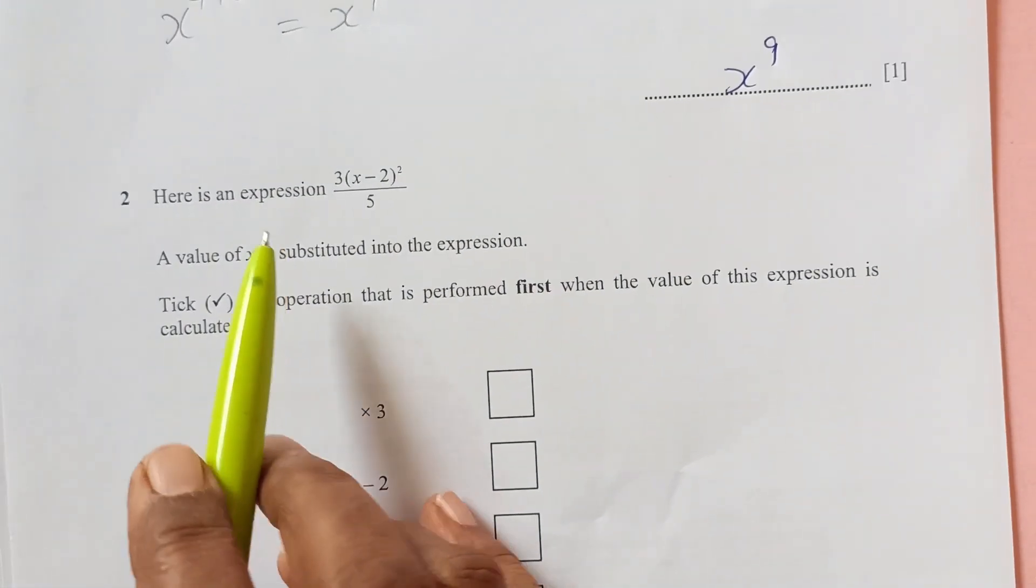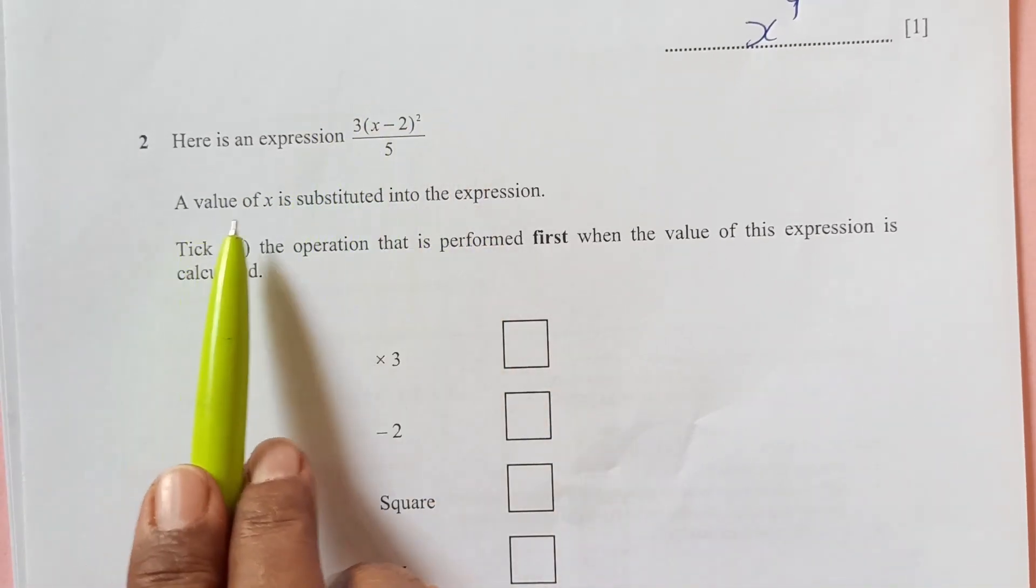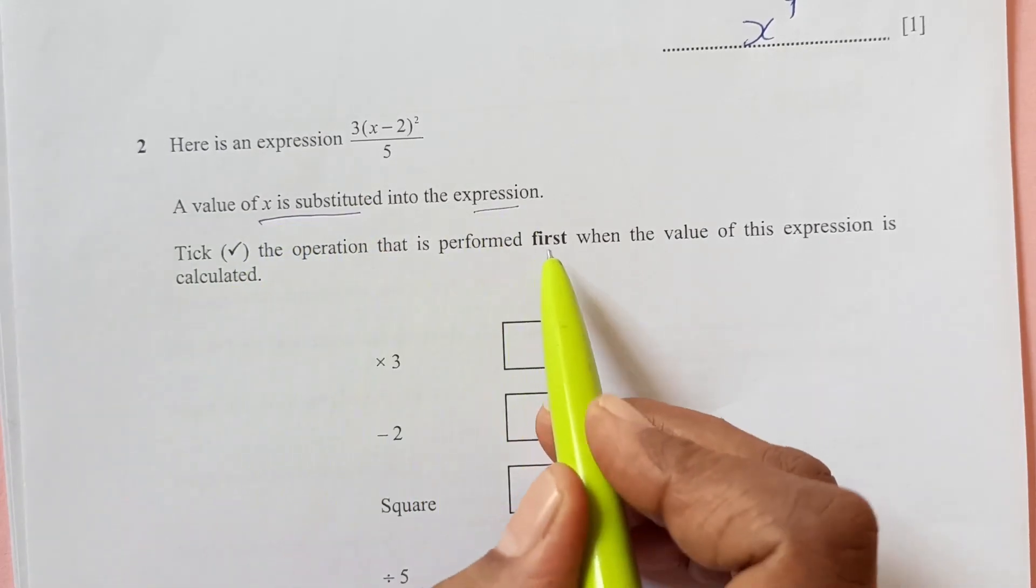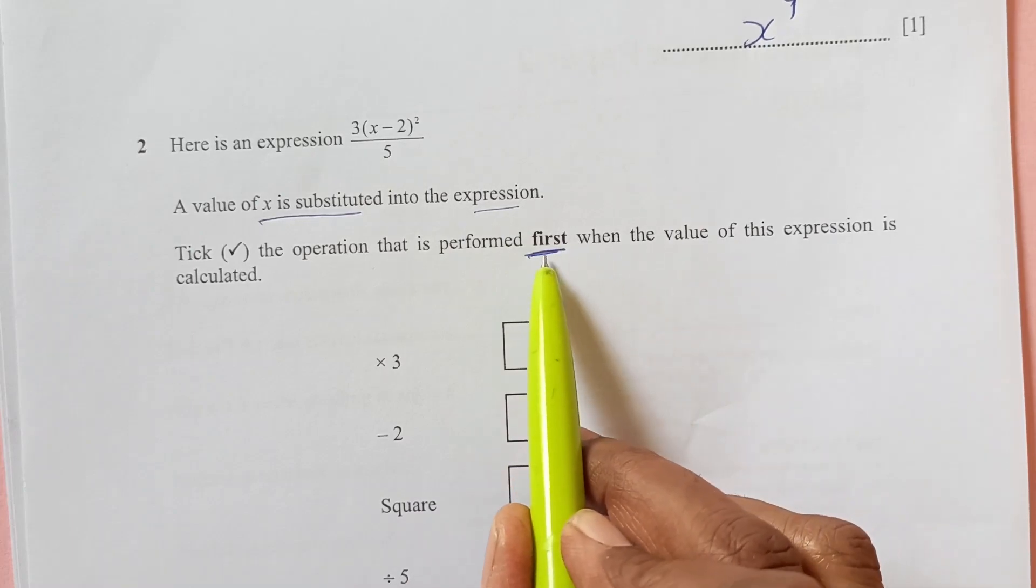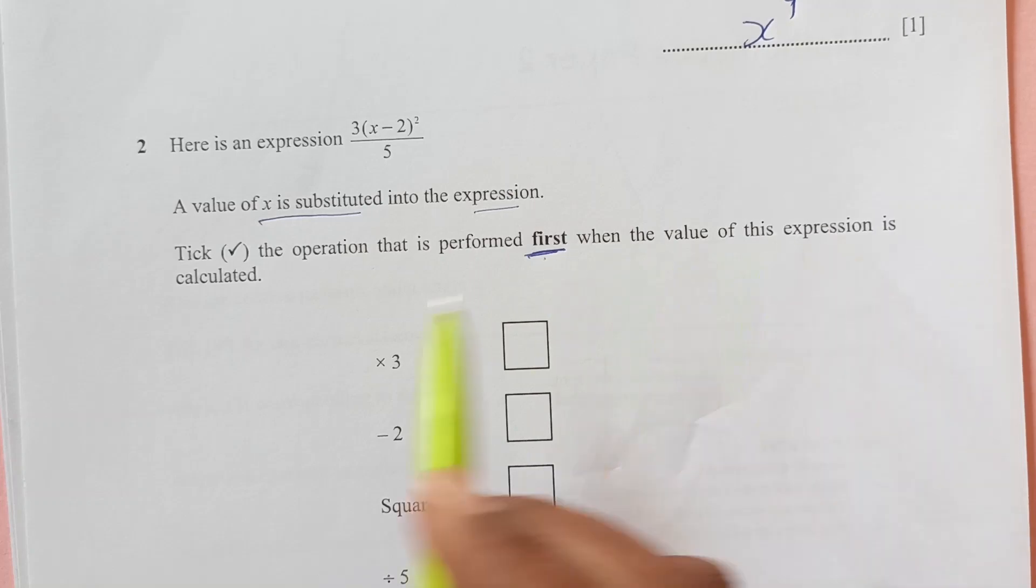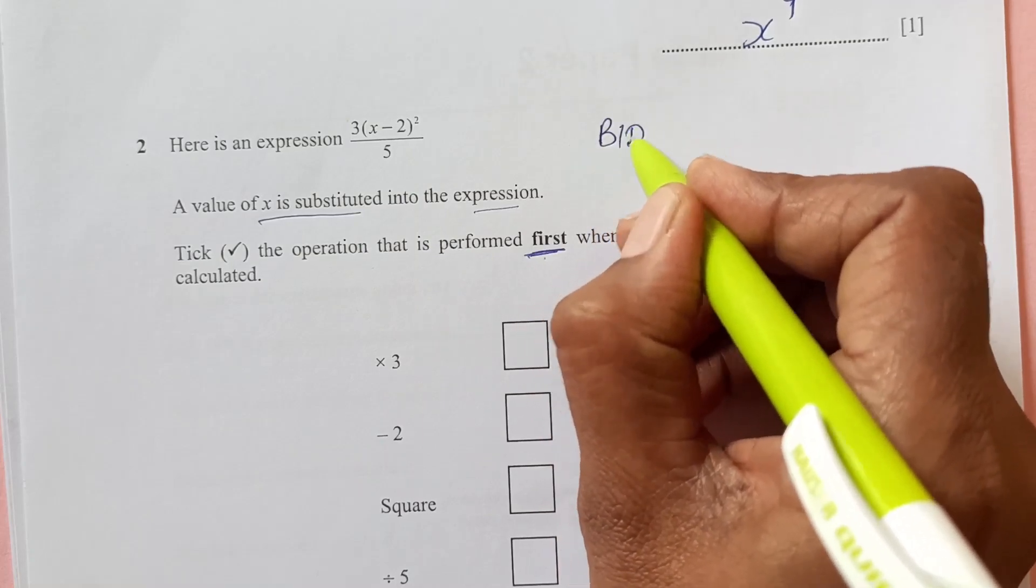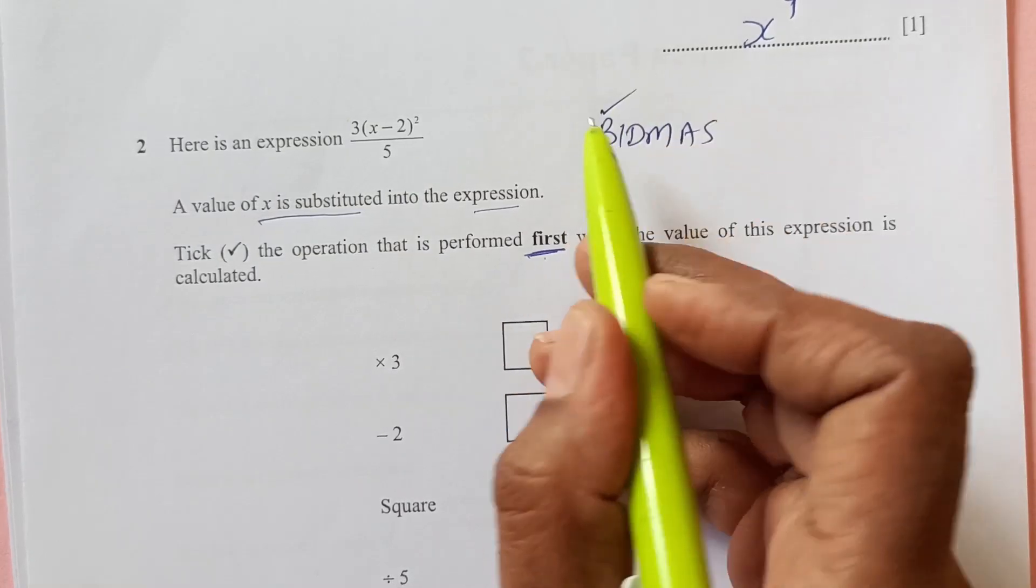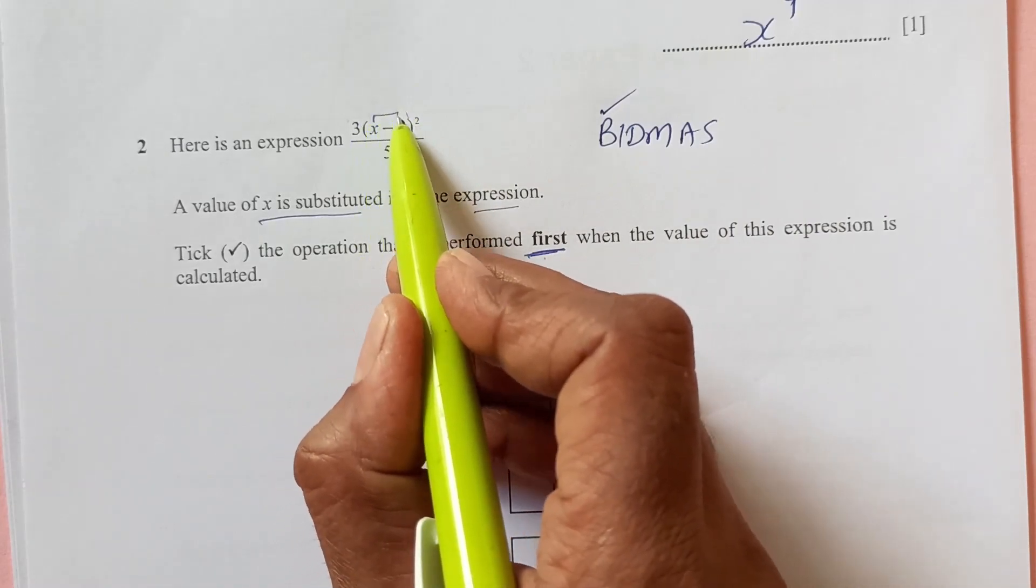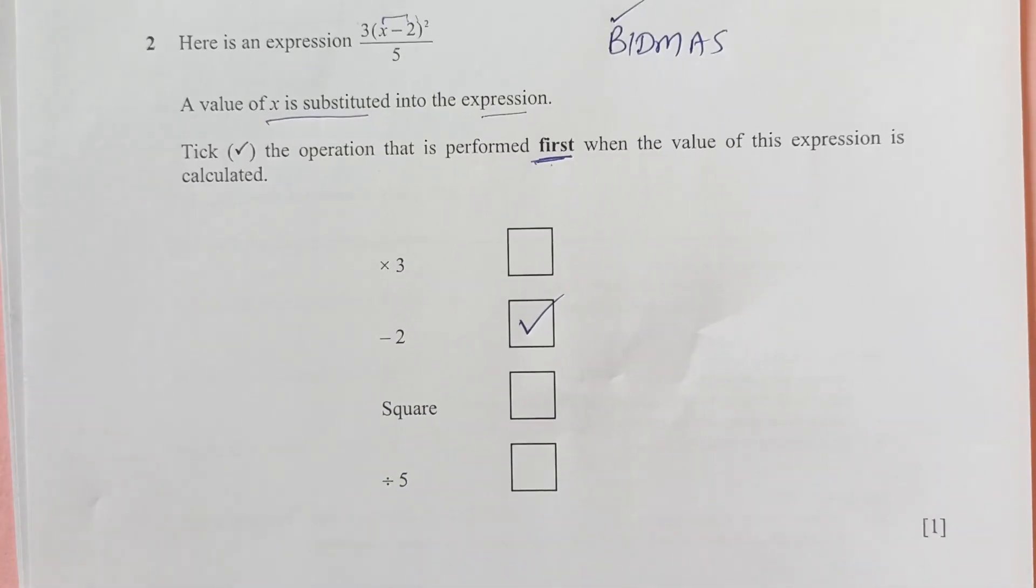Now, number 2, here is an expression. A value of x is substituted into the expression. Take the operation that is performed first. You see, first is underlined, bold here. When the value of this expression is calculated, first of all, using BIDMAS, we are going to solve bracket first. So, in bracket, what do you have first? x minus 2. So, first you will perform this one, that is minus 2. So, we are going to take this one over here.